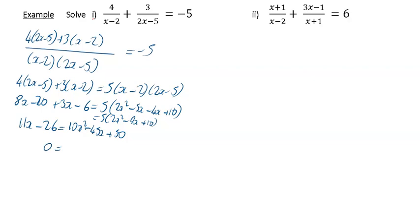I'm going to bring it all over to the left hand side to make the x squared term positive. That's going to be 10x squared, then minus 45x plus 11x gives minus 34x, and then minus 50 plus 26 gives minus 24... so we get 10x squared minus 34x plus 24 is equal to zero.